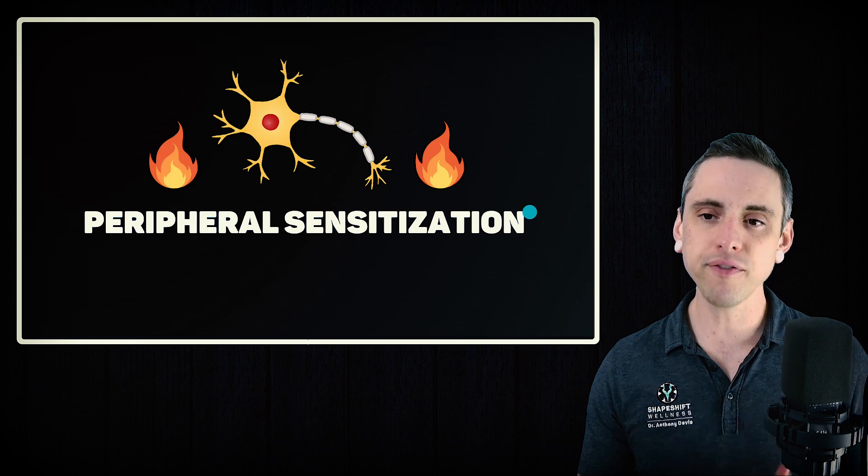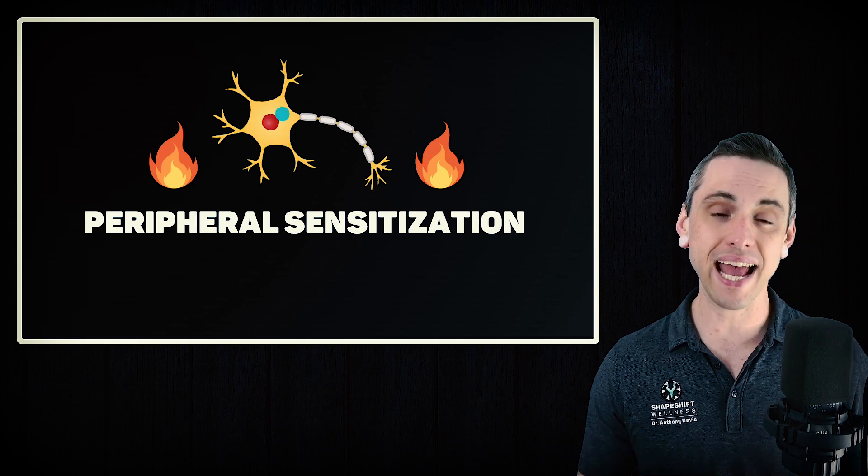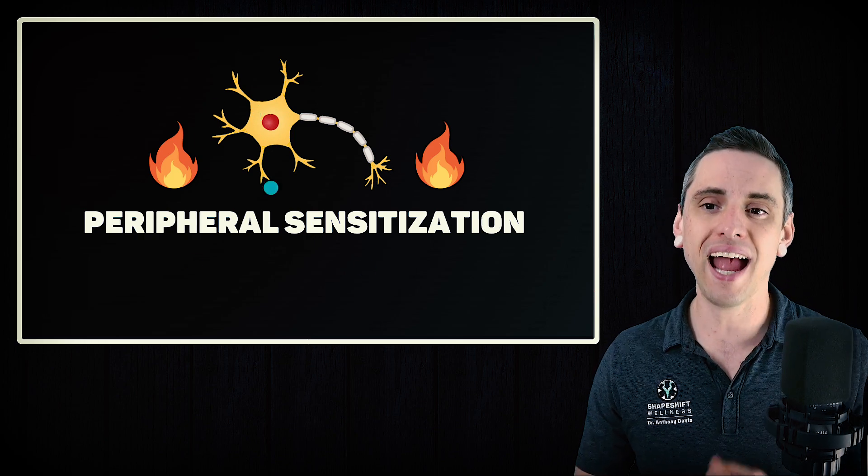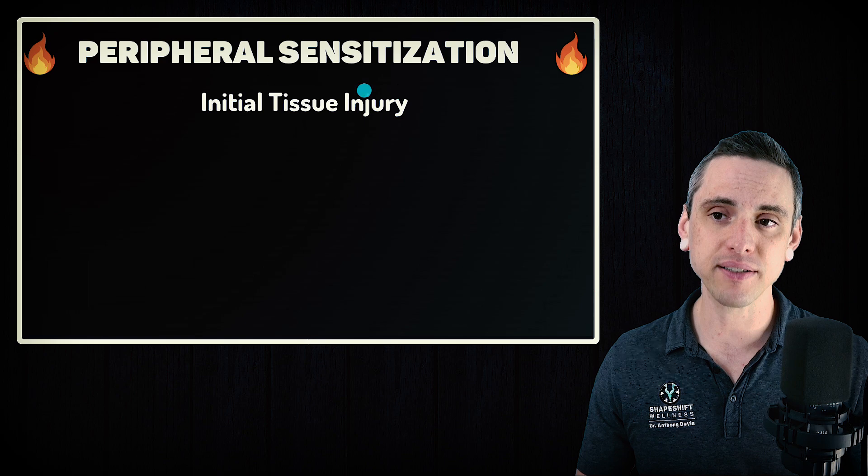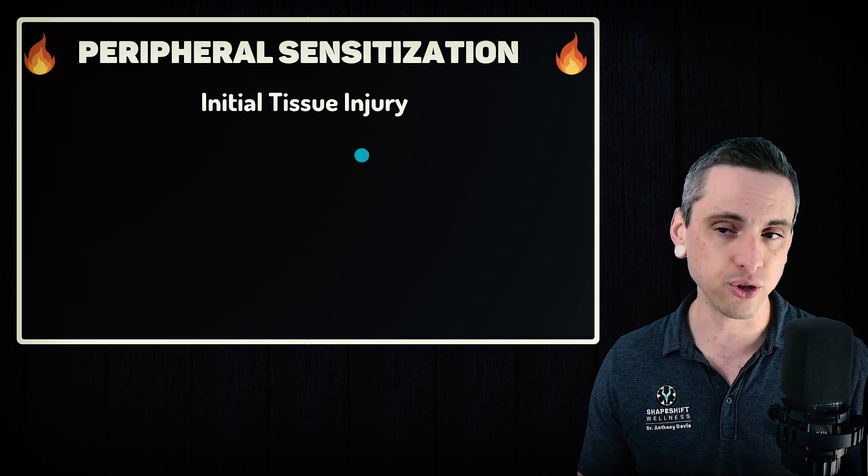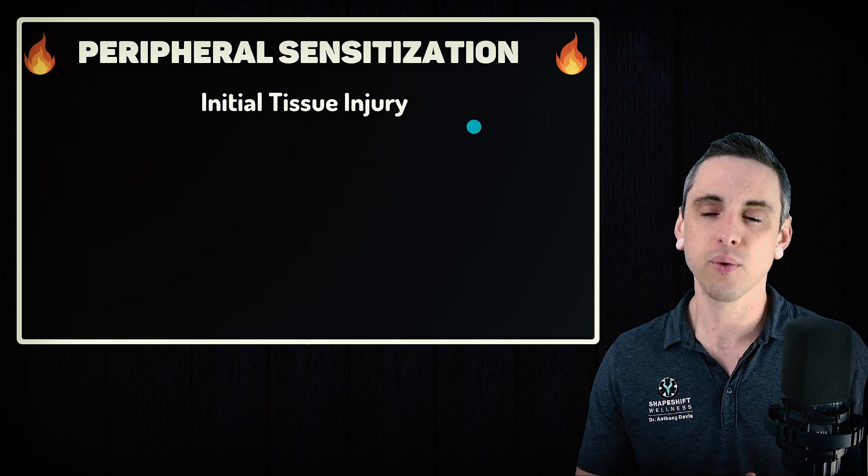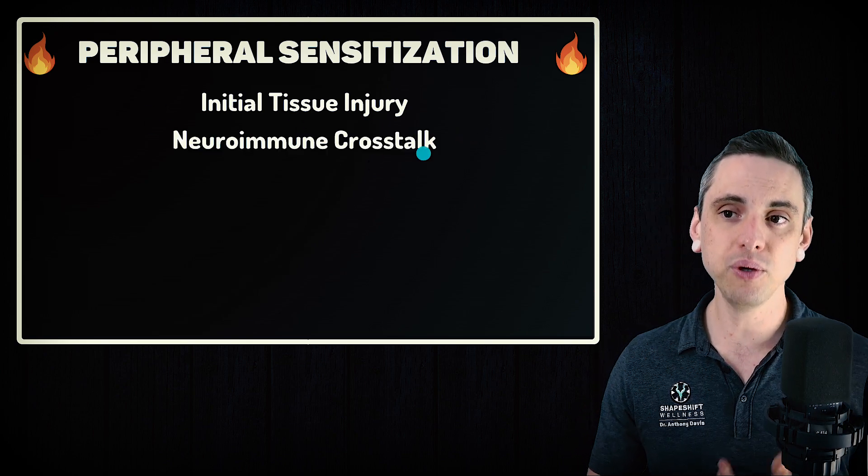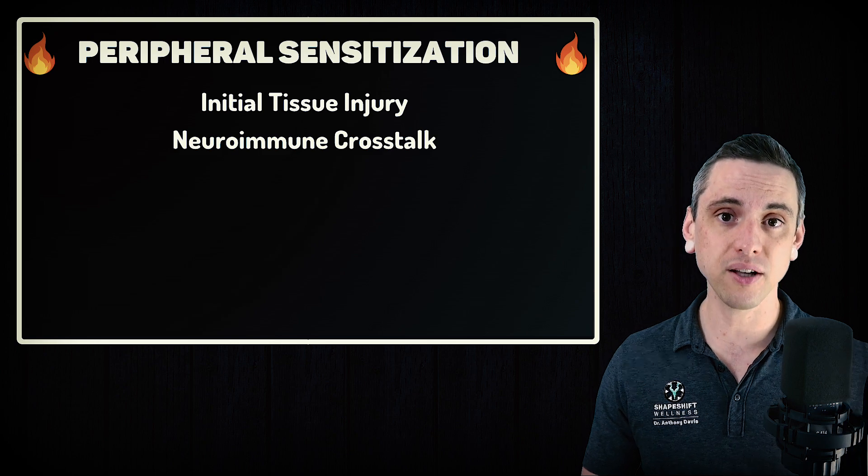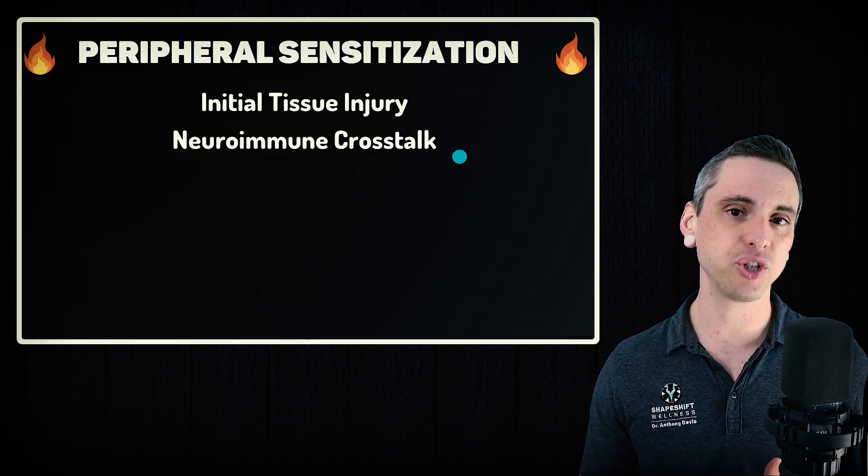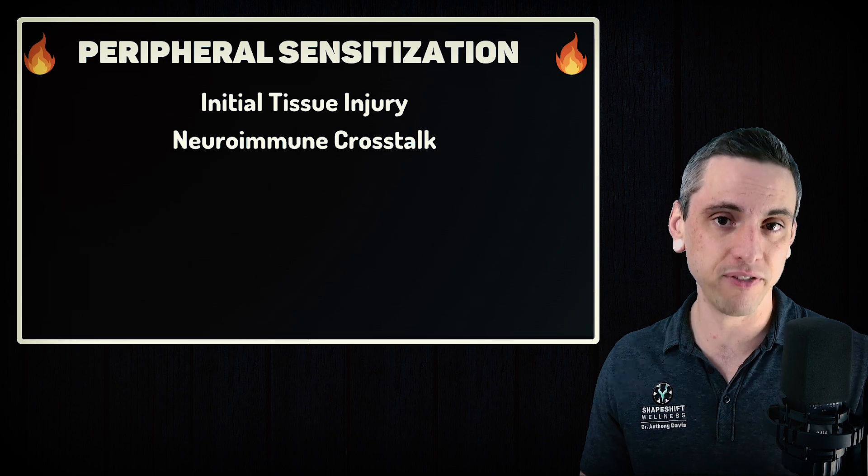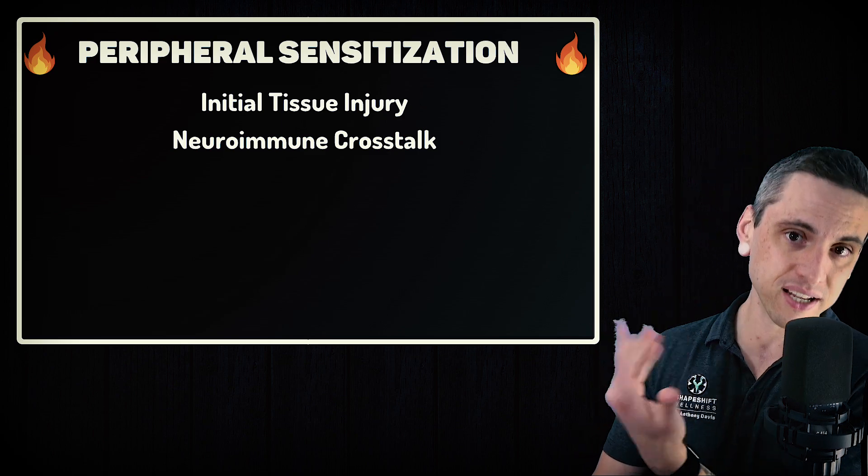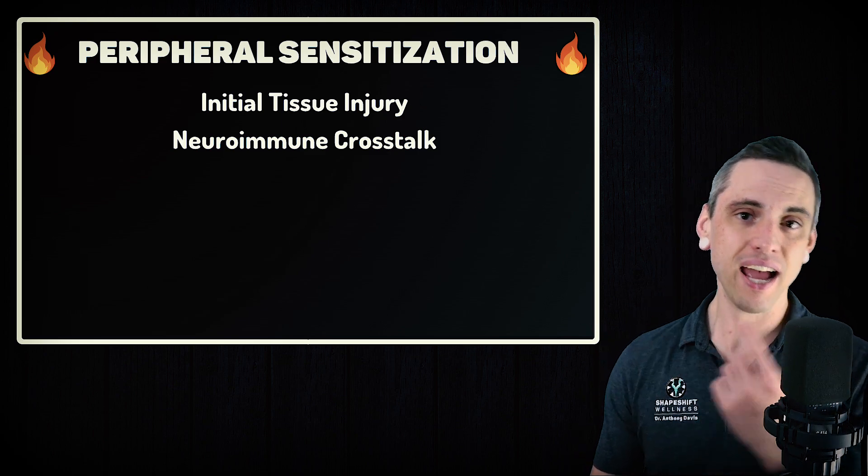So today we learned that peripheral sensitization is where the ends of your nerves in the body, in the back, in the disc, in the nerve, in the joint, in the muscle are extra sensitive. And what happens is, yes, we can have an initial injury. And after that initial injury, we're going to have a bunch of a chemical cocktail of inflammation. We're going to have neuroimmune crosstalk where immune cells rush to the scene to clean up the debris, fight infection, but they squirt out chemical inflammatory mediators that make your nerves extra sensitive. And then your nerves call more immune cells in to fix the issue. And then it's back and forth.